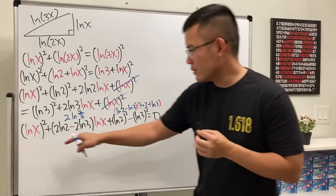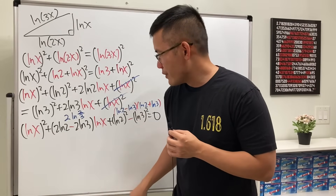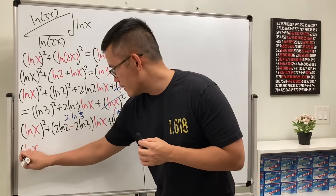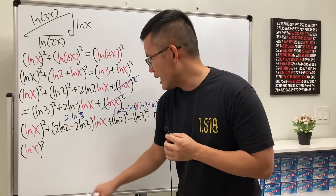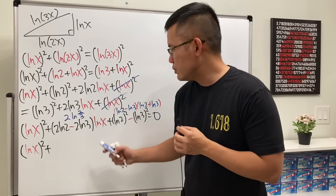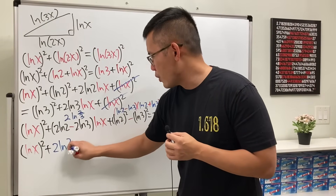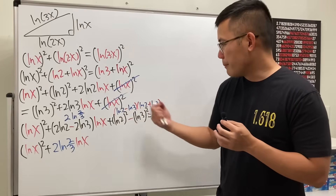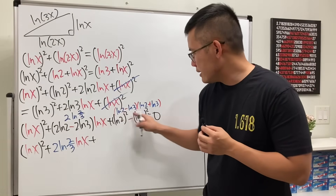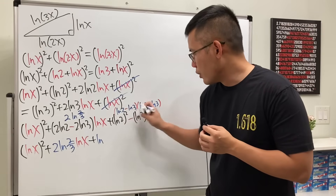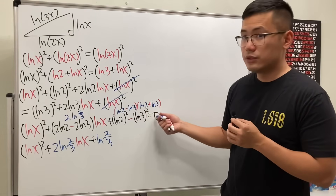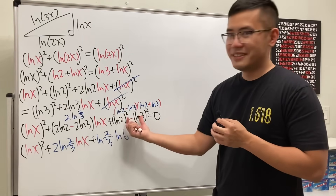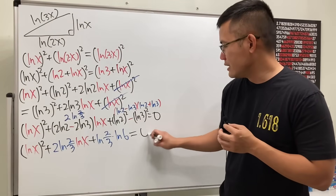Let's rewrite the equation cleanly: ln²(x) + 2·ln(2/3)·ln(x) + ln(2/3)·ln(6) = 0. For the constant term, (ln(2) − ln(3)) = ln(2/3) and (ln(2) + ln(3)) = ln(6), so the constant is ln(2/3)·ln(6). This is our quadratic in ln(x).